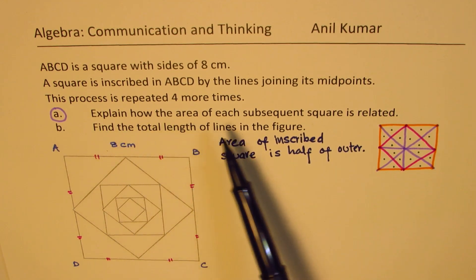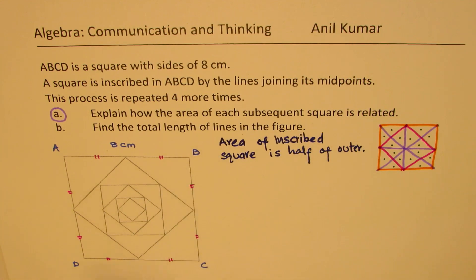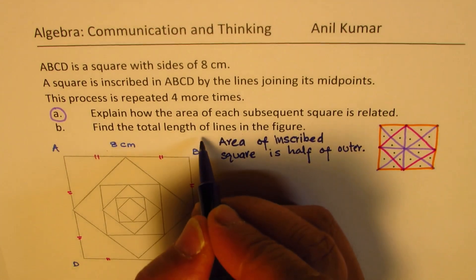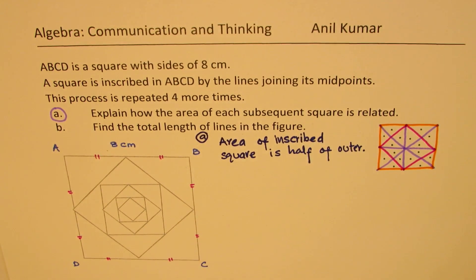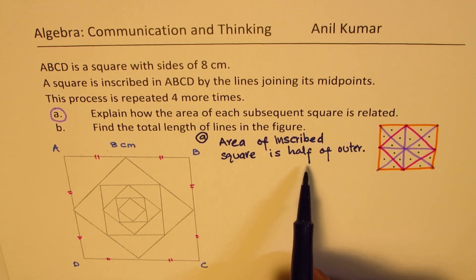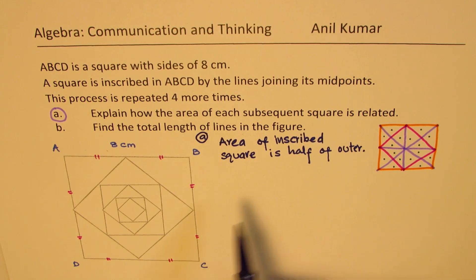Explain how the area of each subsequent square is related. That is how they are related. Each subsequent square area is half of the outer. Now this is a very important conclusion and it can be used in solving some of the most complicated questions which you see in many competitive exams.